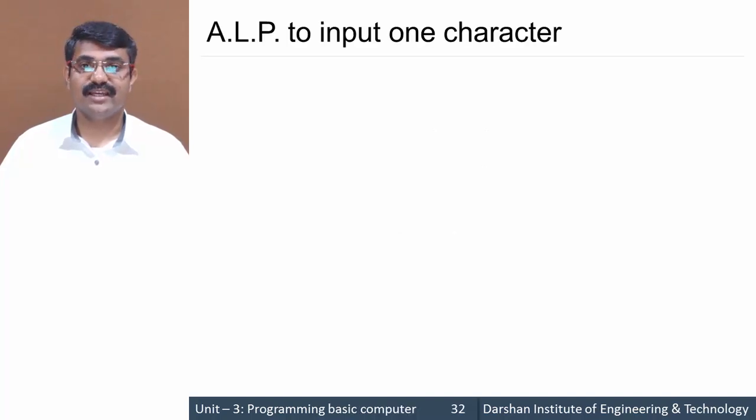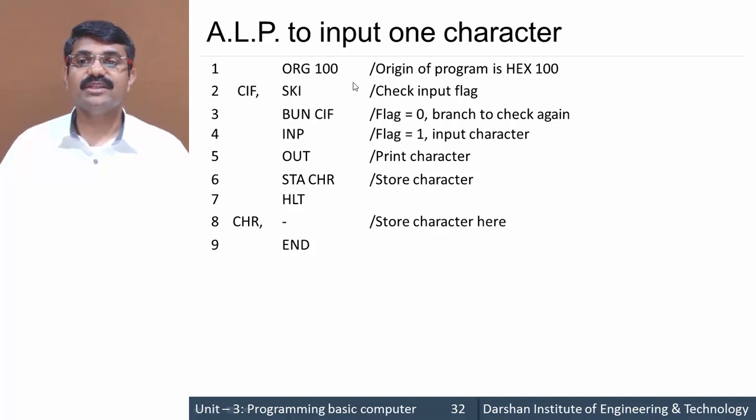Let's first see the program for inputting one character from the keyboard. The program starts with the origin address at 100, then the first instruction written is SKI. You should be aware about the instruction SKI - skip on input flag.